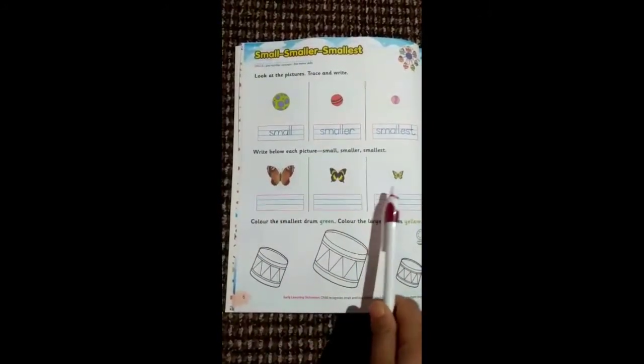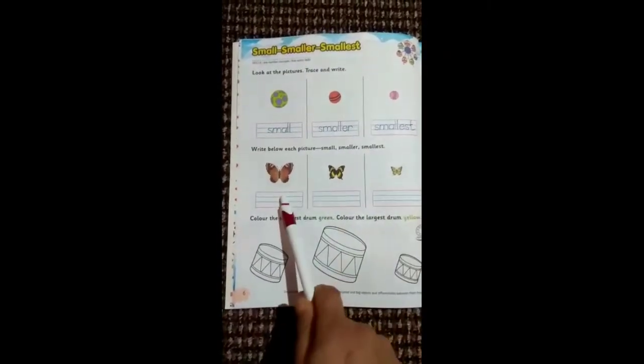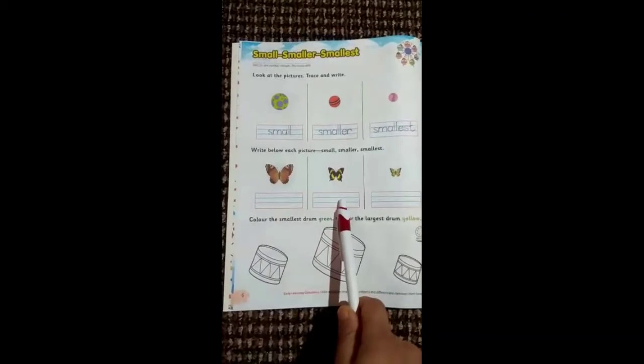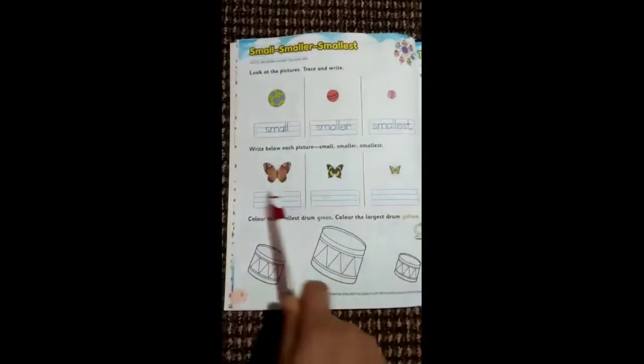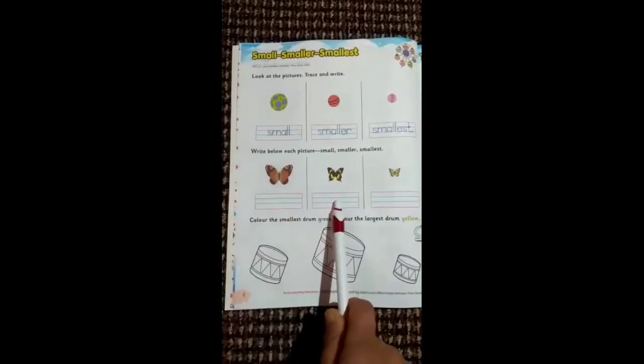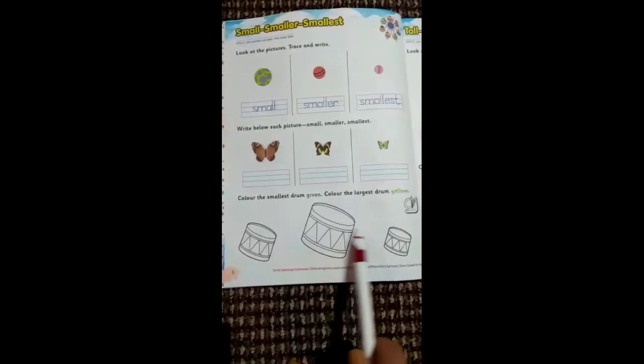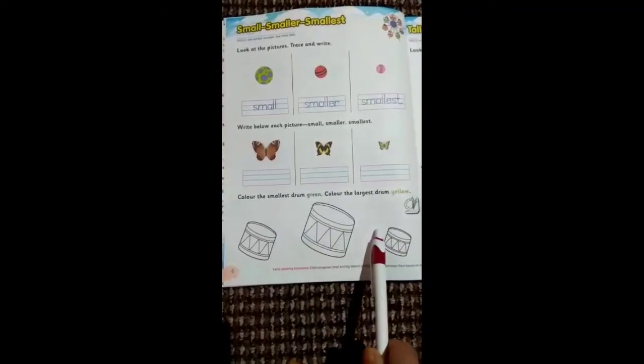Just compare their size. This is small, this is smaller, and this is smallest. You have to write down the words small, smaller, smallest. Now here you have to do an activity.